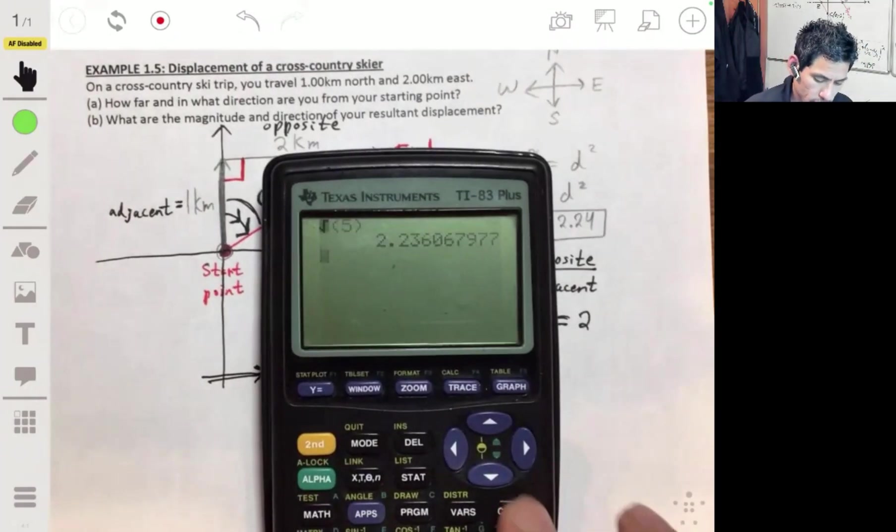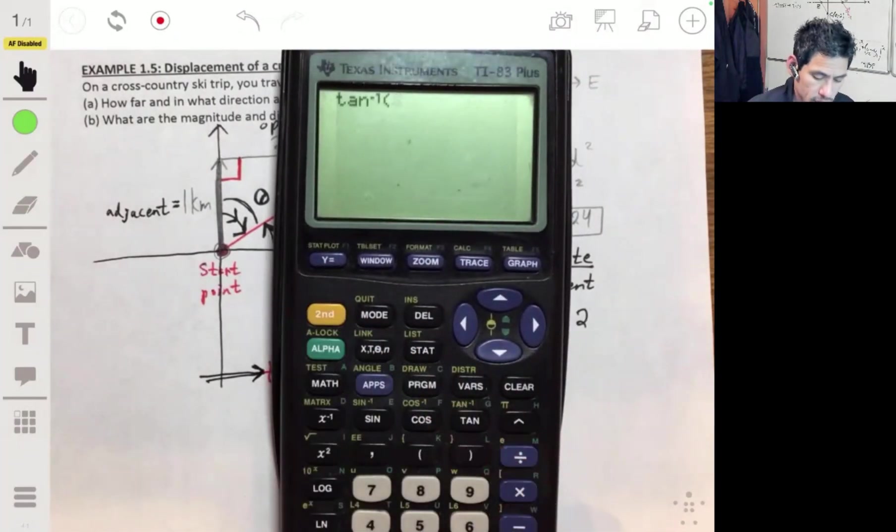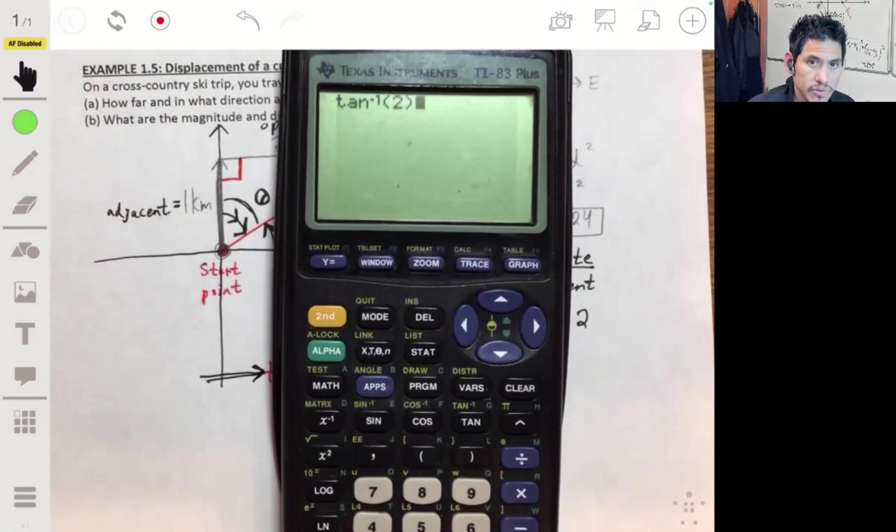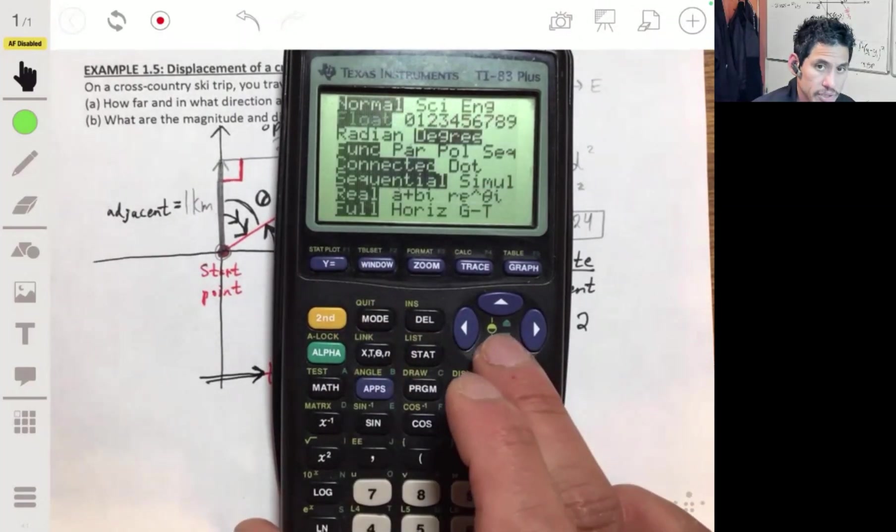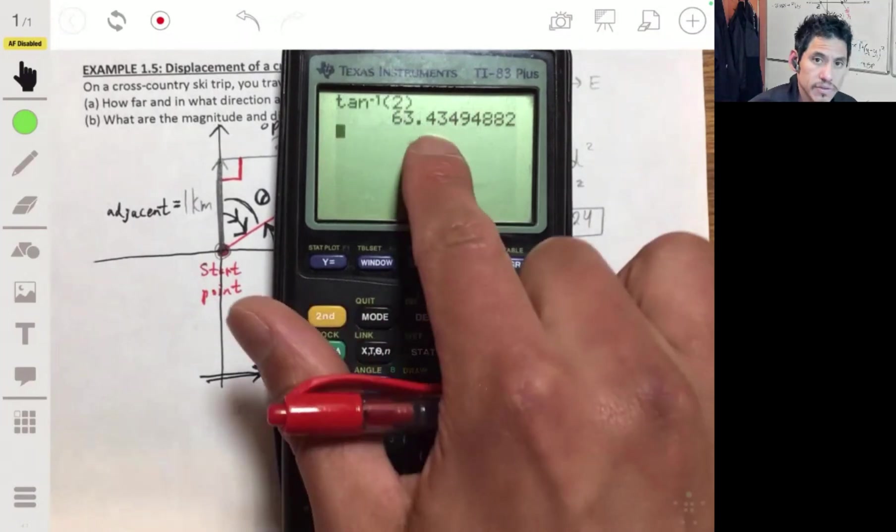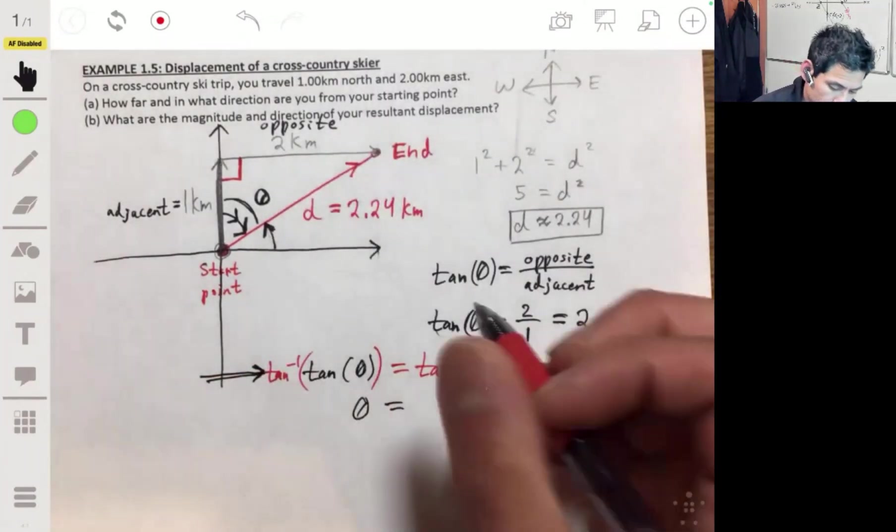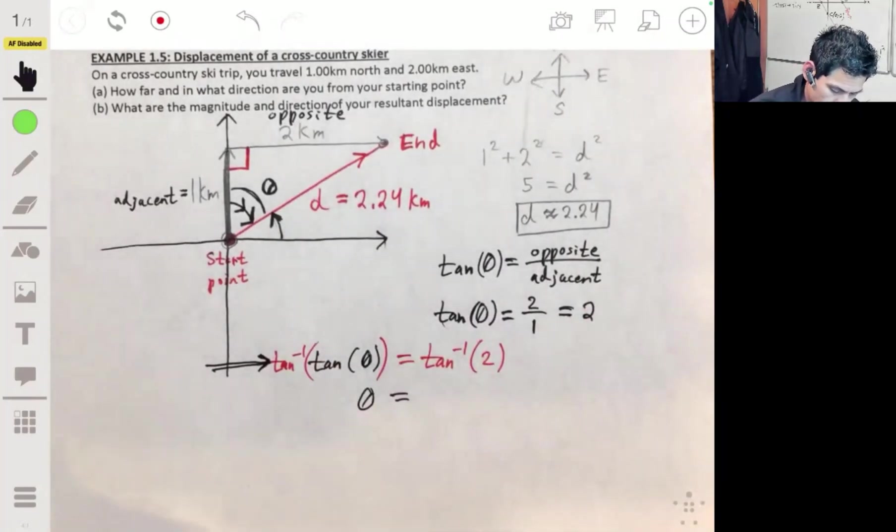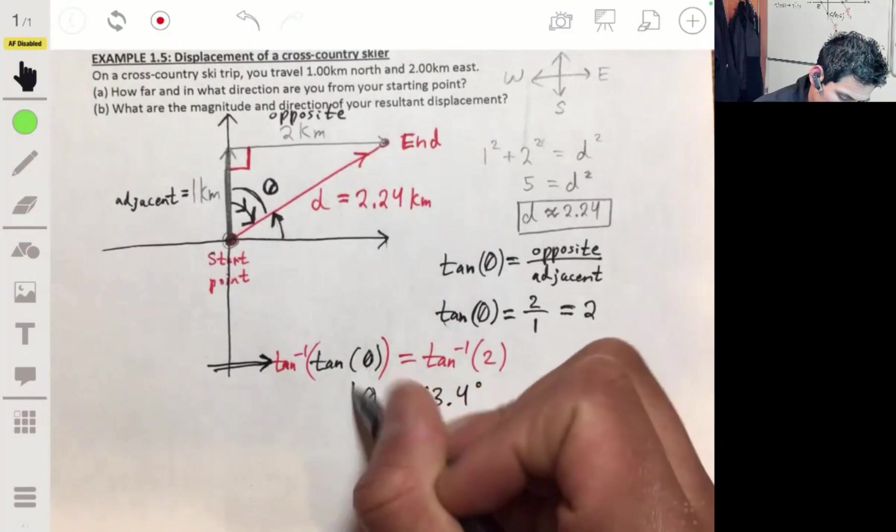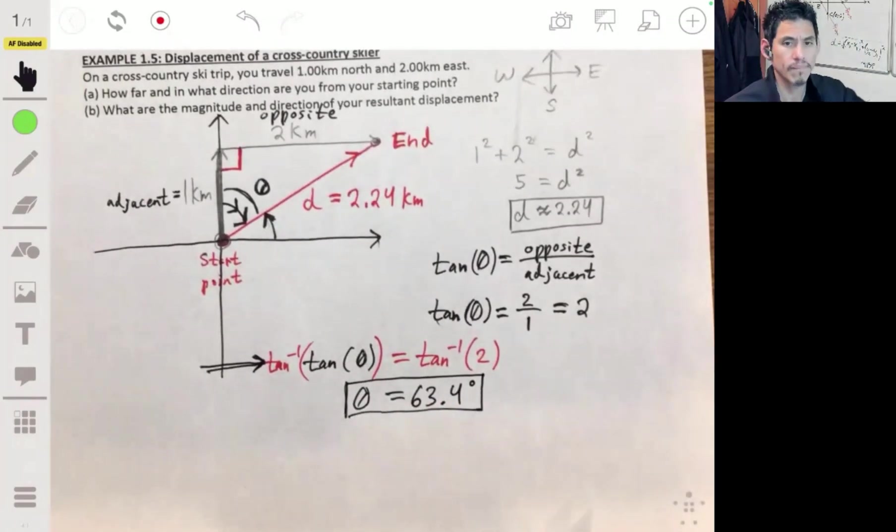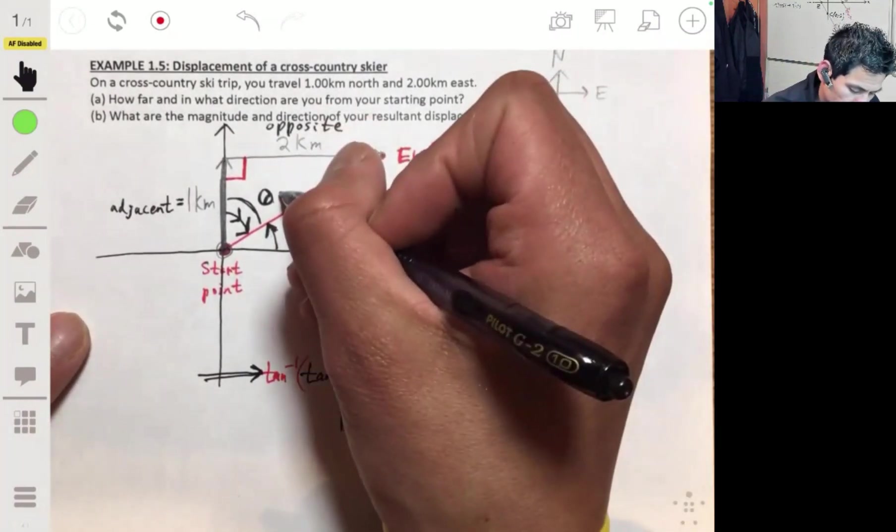So using our calculator, we can go tangent inverse of two, we get 63.43. Make sure your mode is in degrees, which in this case it is. So we're good. So the angle then is about 63.4 degrees.